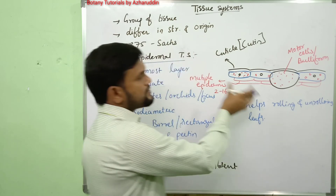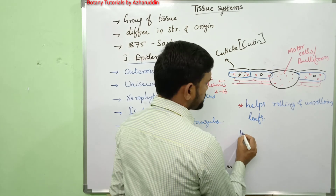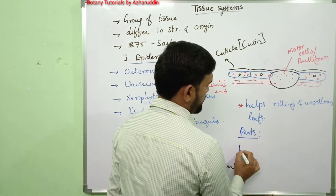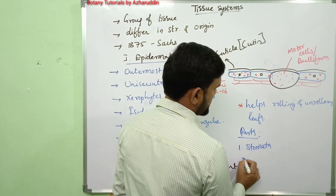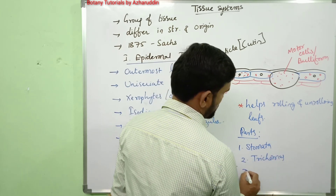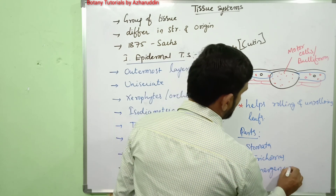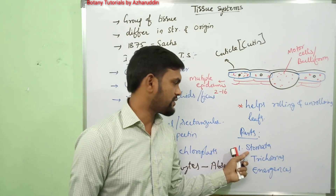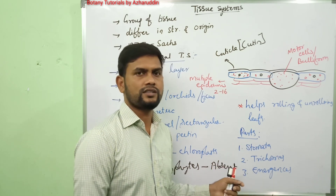In the epidermis, mainly three parts are present: number one, stomata; number two, trichomes; and number three, emergences. The detailed structure of stomata, trichomes, and emergences, along with their functions, will be explained in the next class.